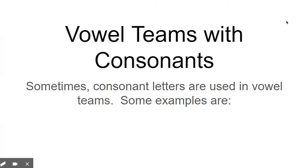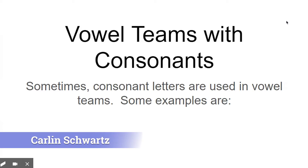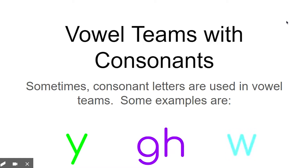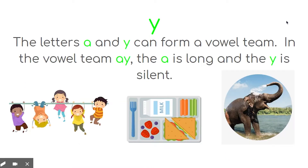Today's phonics lesson is about vowel teams. We are learning about vowel teams with consonants. On Monday, we learned that a vowel team is when two letters go together to make one vowel sound. Sometimes, consonant letters are used in vowel teams. Some examples are Y, G-H, and W. The letters A and Y can form a vowel team. In the vowel team A-Y, the A is long and the Y is silent.